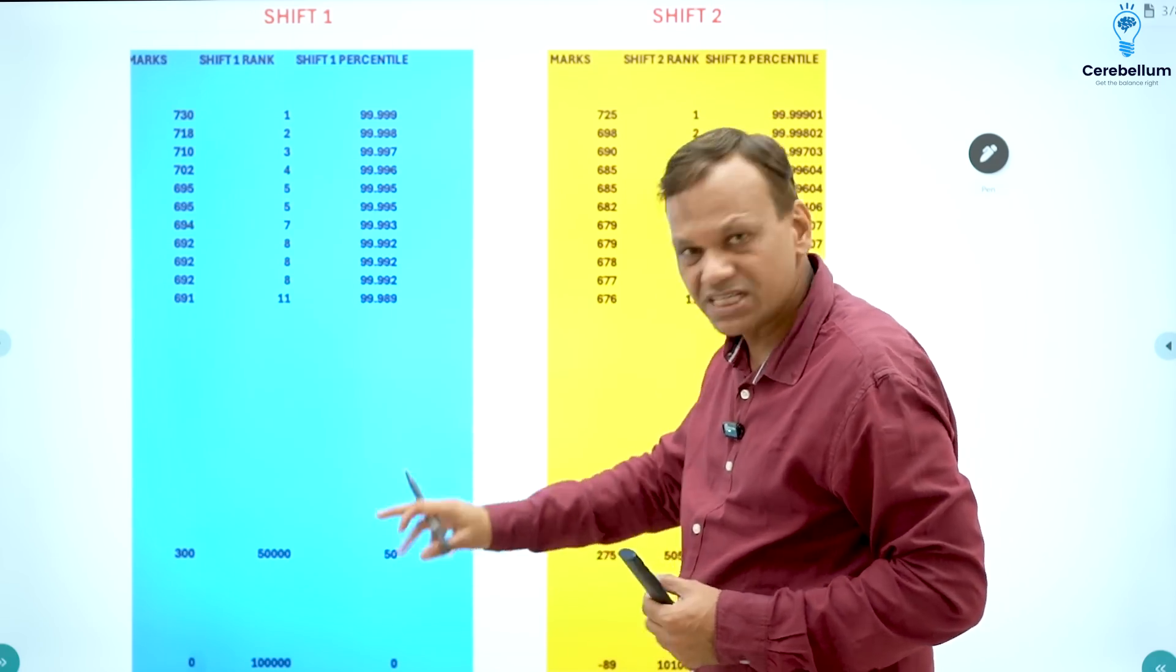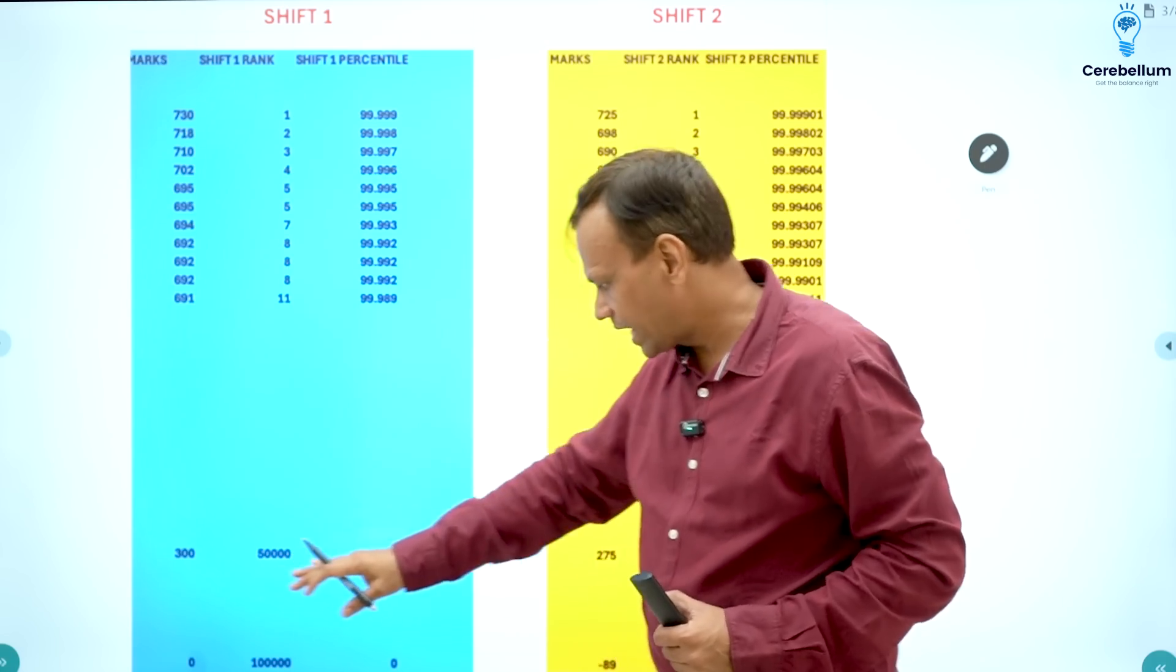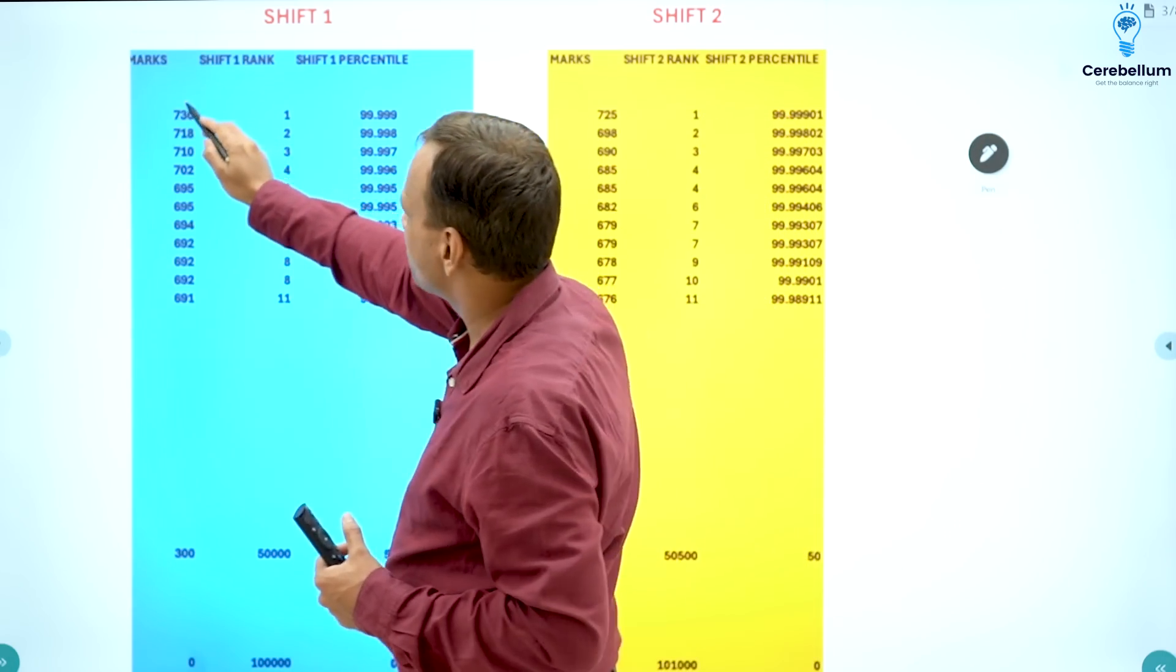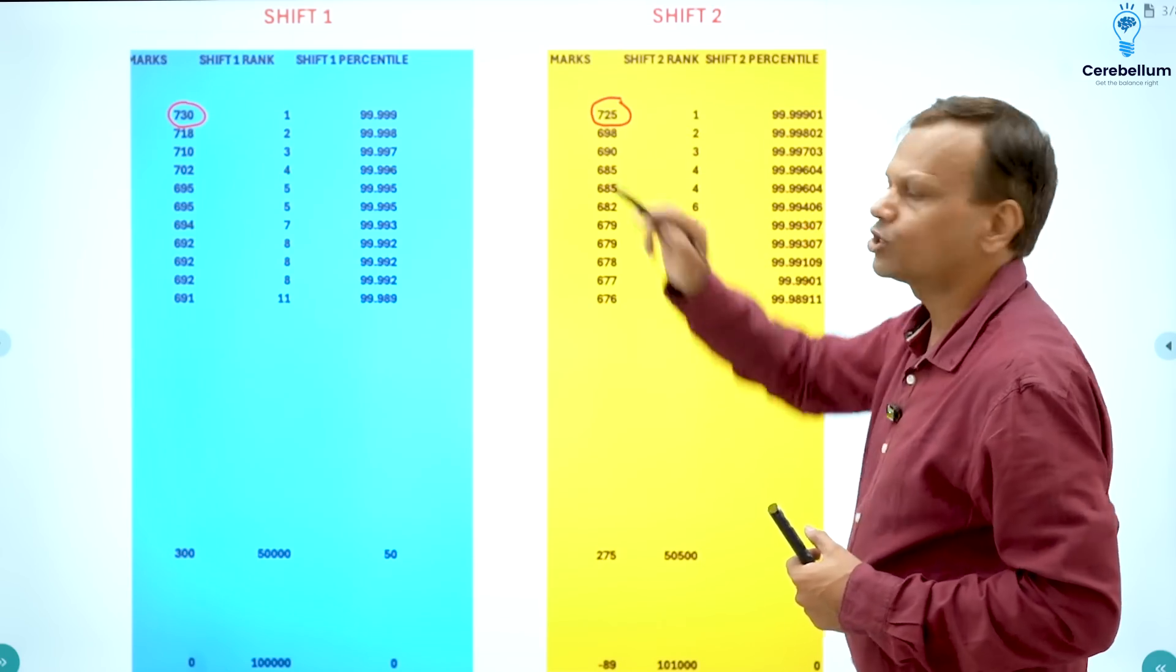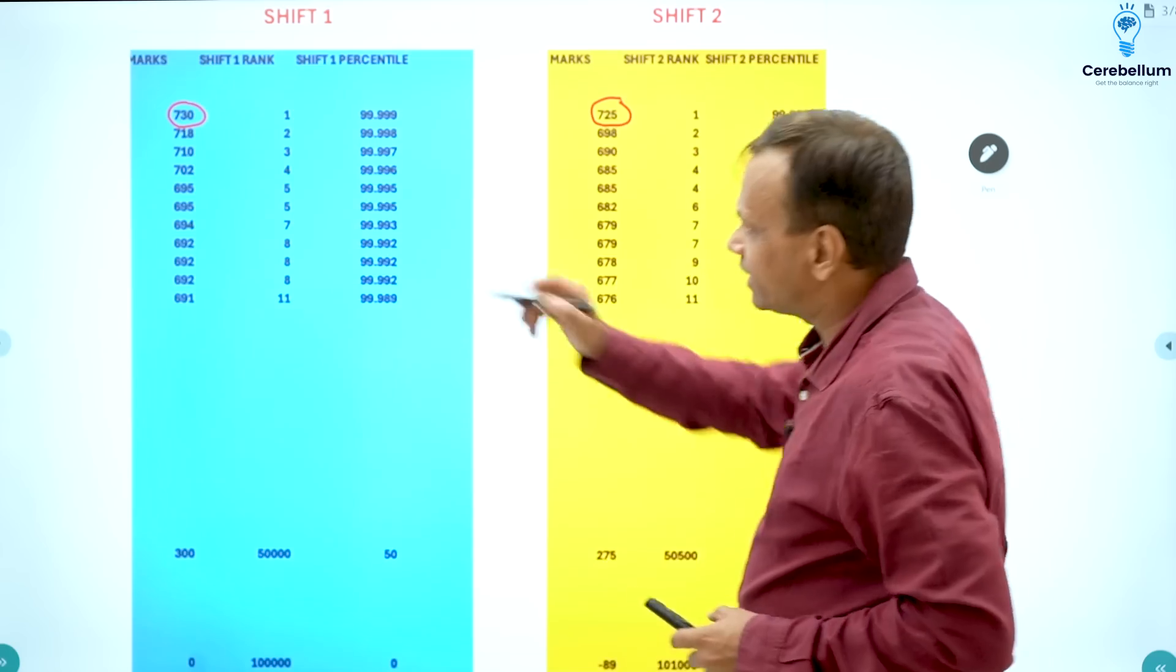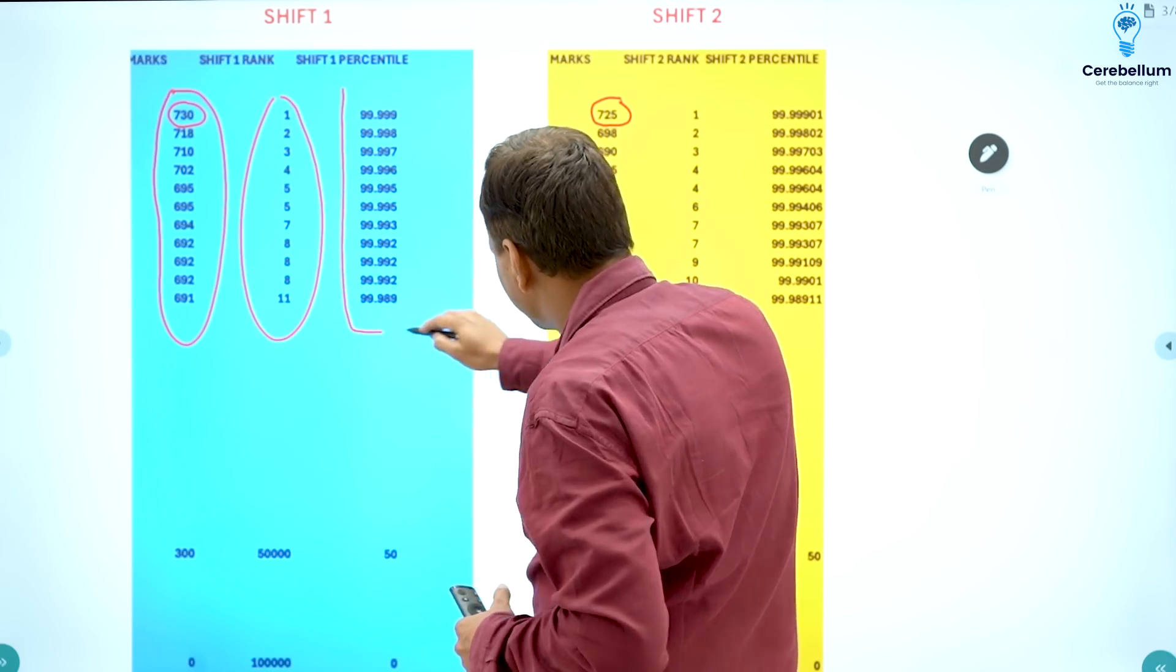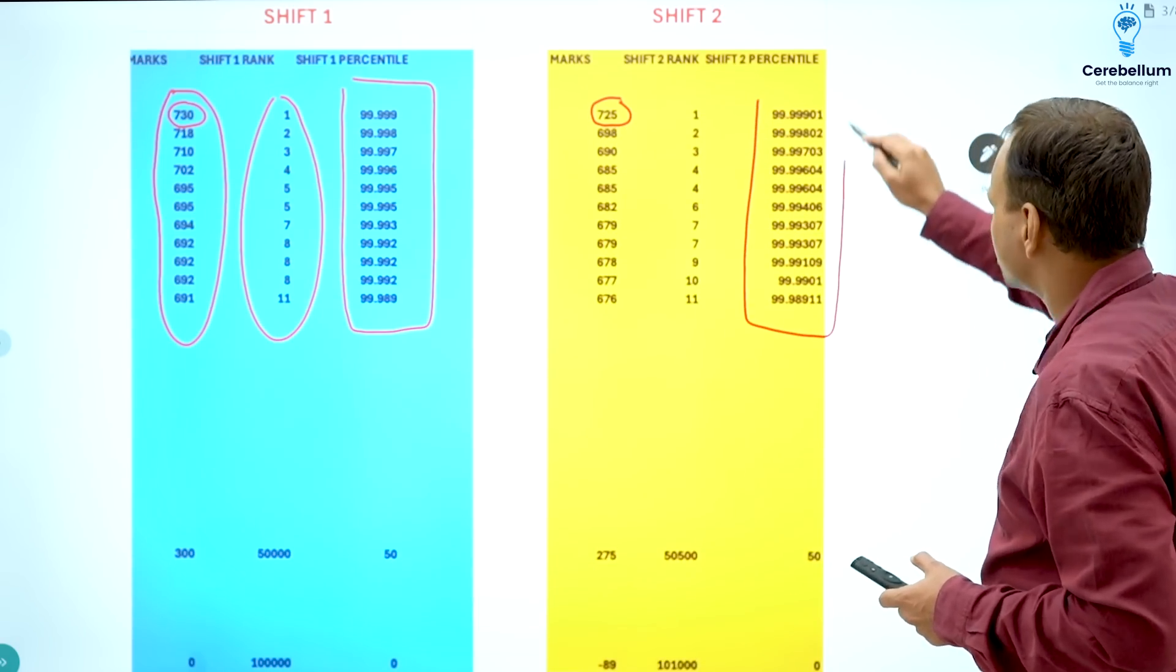So if we see that 50th percentile means 50 percent students are below, that means out of 1 lakh, 50,000 will be below. So 50,000 rank for 50th percentile. The same is done here. I have kept the marks also slightly different. Like rank 1 in the morning shift, suppose he gets 730 and in evening shift, he gets 725. It may be anything. So I have just randomly written the numbers. Now they do not consider these marks or even these ranks. What will be considered for normalization is the percentile score. Percentile score of both these shifts will be considered.